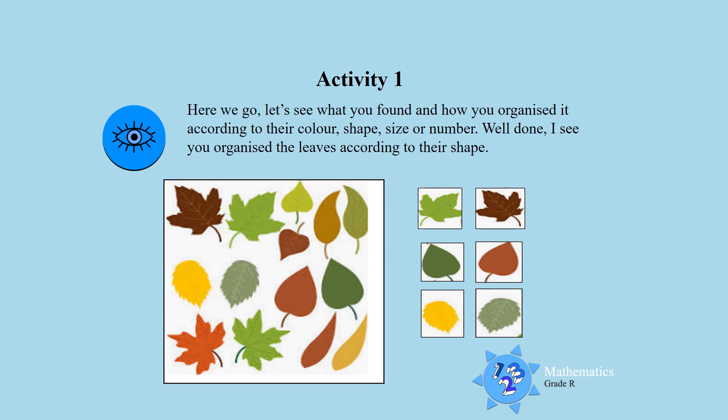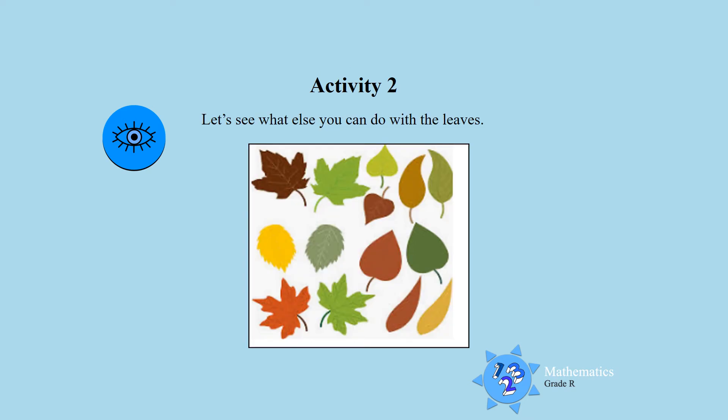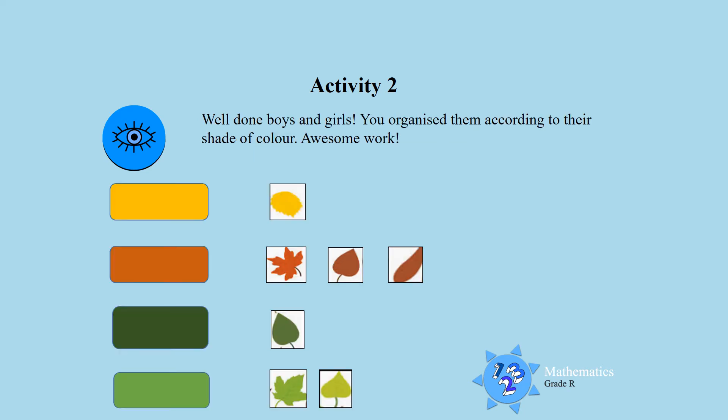Activity two: let's see what else you can do with the leaves. Yes, you organized them according to their color. That is very, very good, well done boys and girls. I see yellow and brown, dark green and light green leaves. So you did well by organizing them.